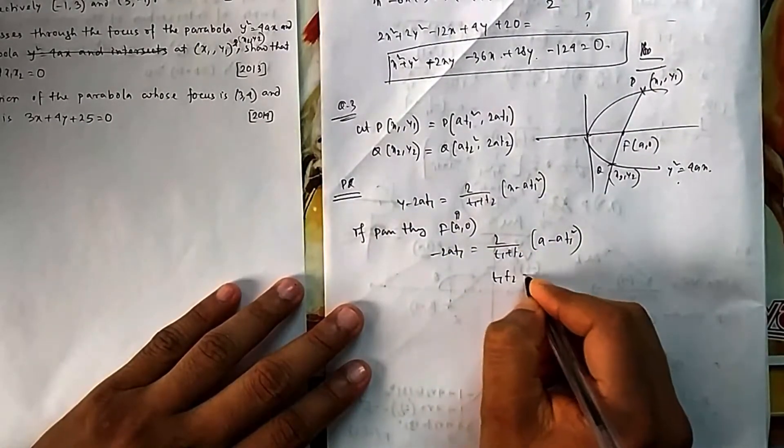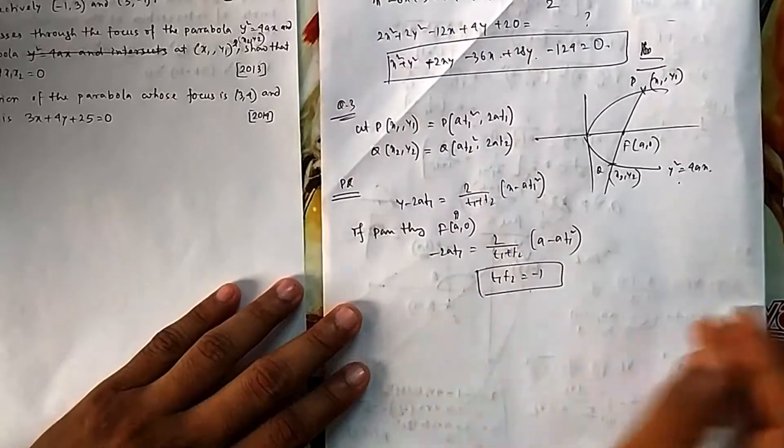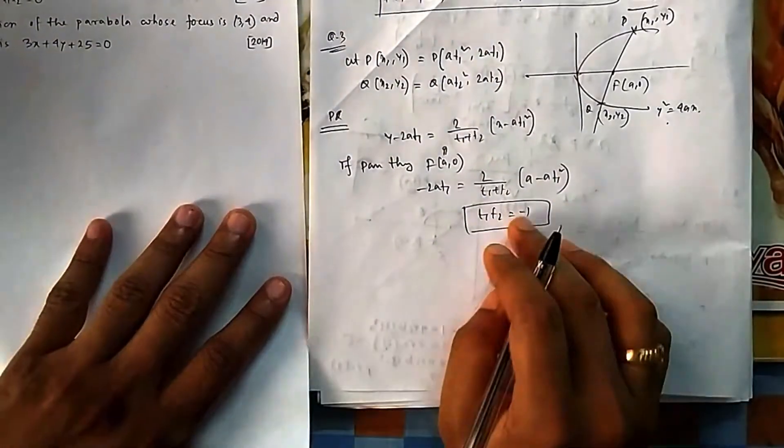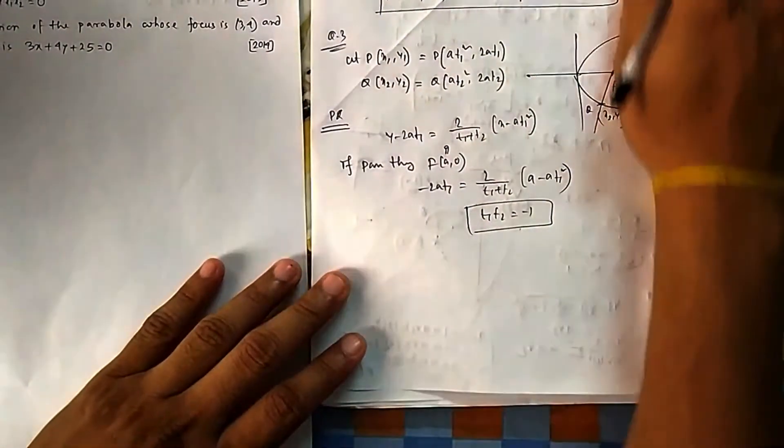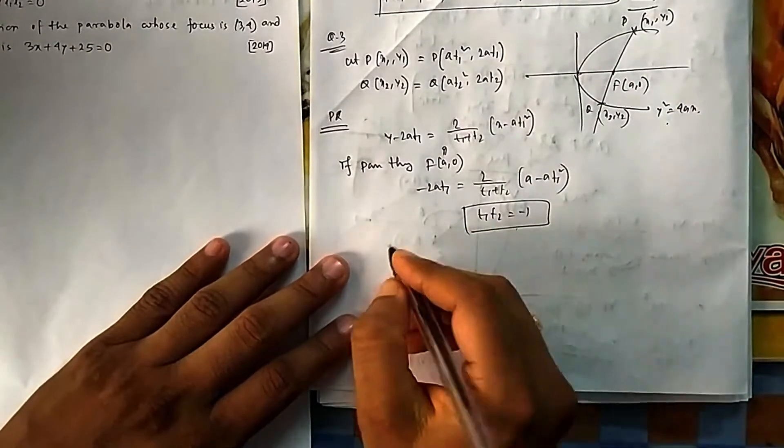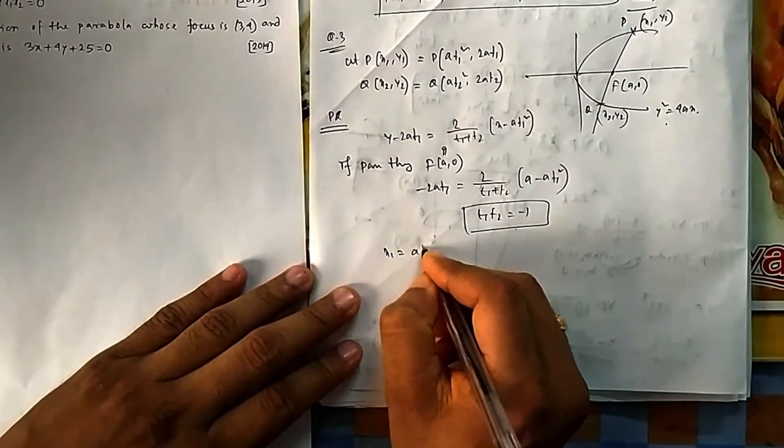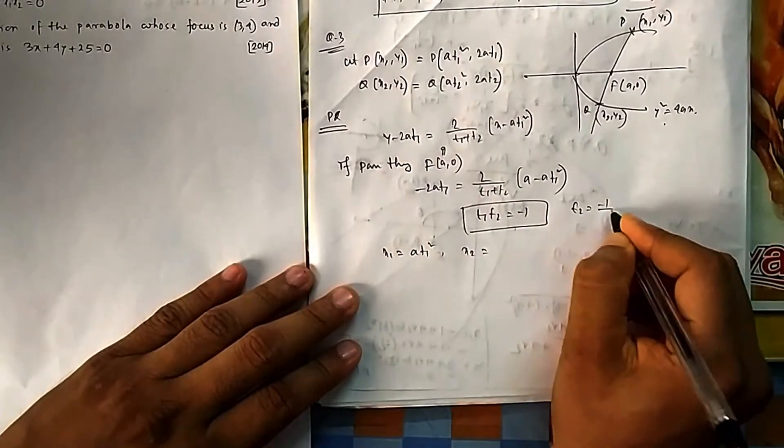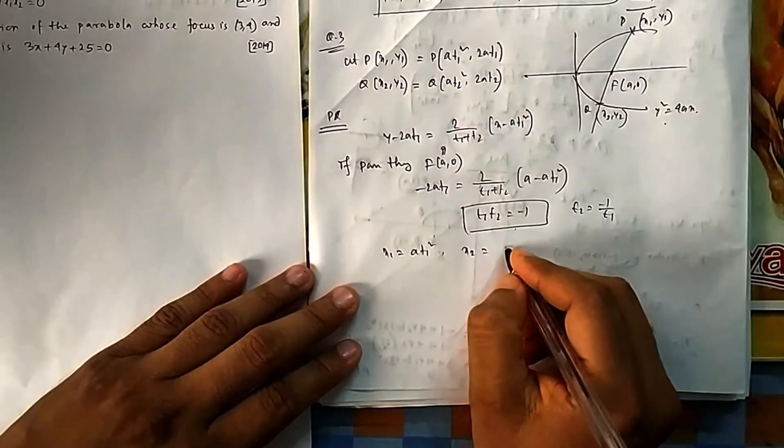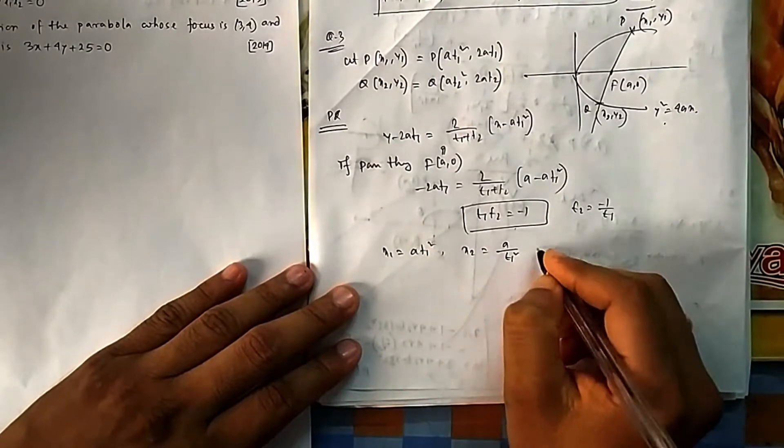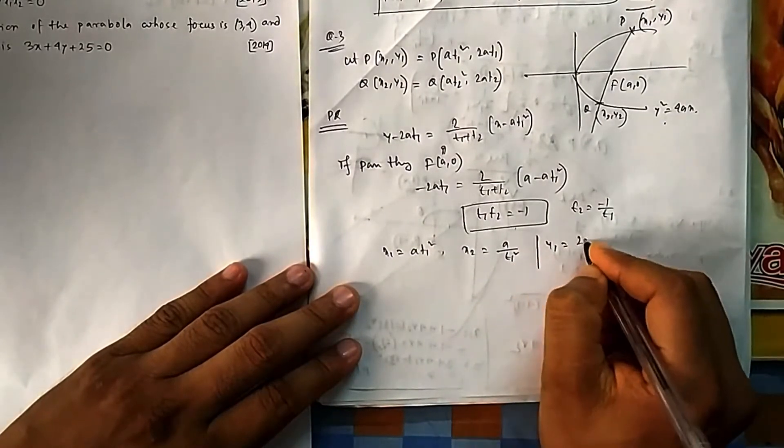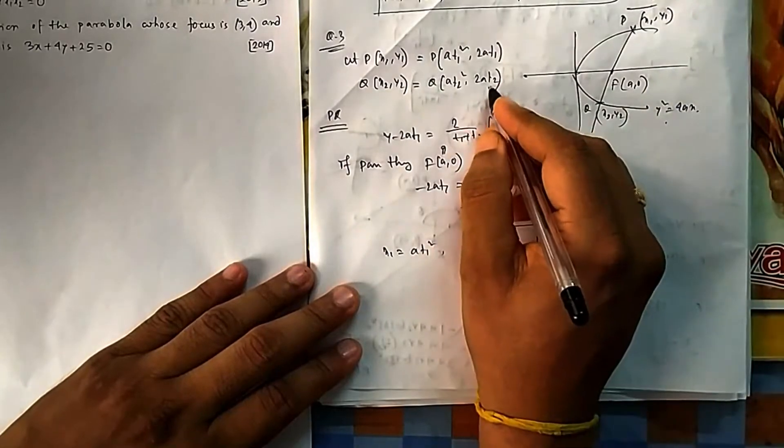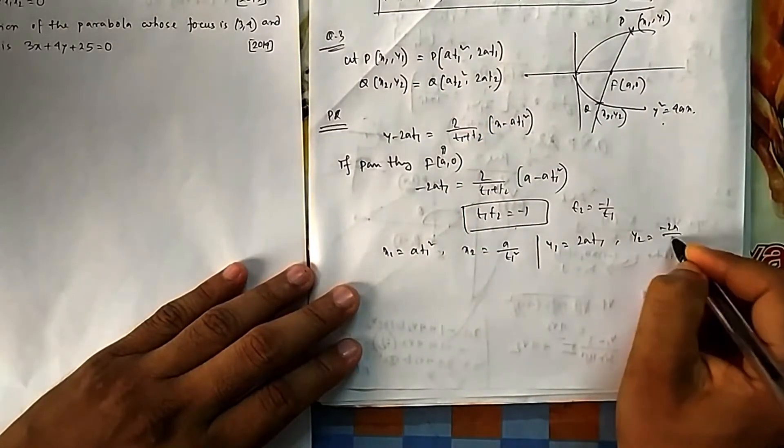So if you solve it, you will find t₁t₂ = -1. This is a standard one, but you cannot use here because it is a subjective question; you have to write it. So once you know this, what will be your x₁? x₁ = at₁². What will be x₂? Because t₂ is also -1/t₁, what will be x₂? a/t₁². What will be y₁? 2at₁. What will be y₂? In place of t₂ I am writing -1/t₁.